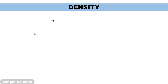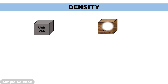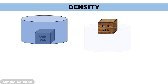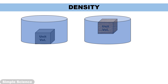Density. What is density? Take unit volume of an iron cube and unit volume of a wooden cube. Unit volume means 1 cm cube or 1 m cube — in this case we are taking 1 cm cube. So both of them have the same volume. Now if you place the iron cube in water, it will sink. But if you place the same volume of wooden cube in water, it will float.